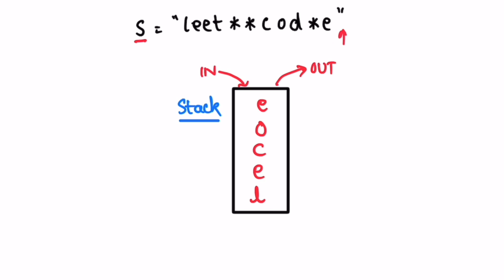Now we use a while loop — until the stack is empty, we keep popping elements and storing them inside a string builder. Initially the string builder is empty. The topmost element is 'e', so pop it, add it to the string builder, and it is removed from the stack. Stack is not empty, so remove the topmost element 'o' — it will be added to the string builder and removed from the stack.